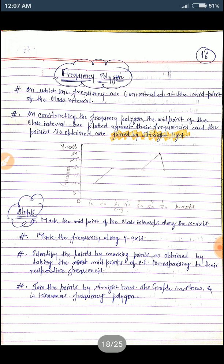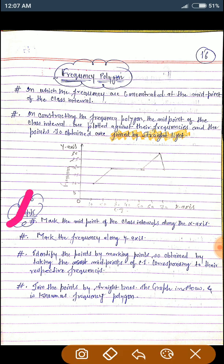Next is frequency polygon. Frequency polygon in which the straight lines should be joined. One should be joined by the straight line. It's called frequency polygon. Here are the steps for frequency polygon.